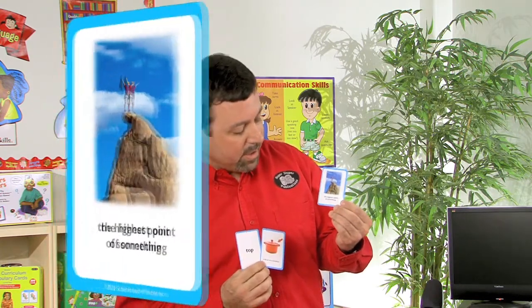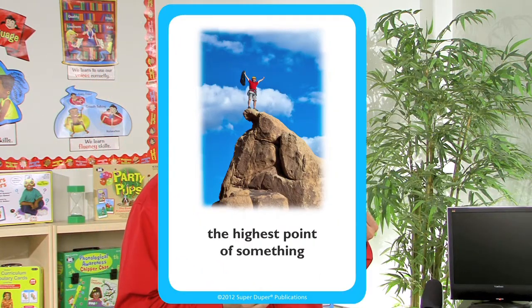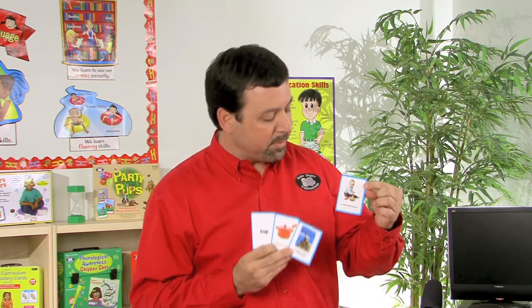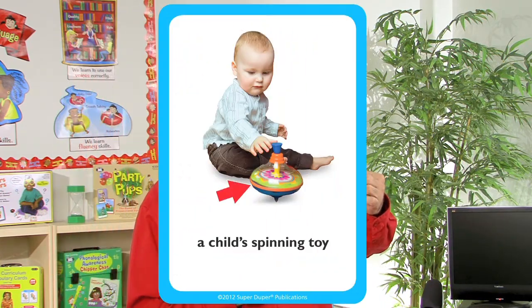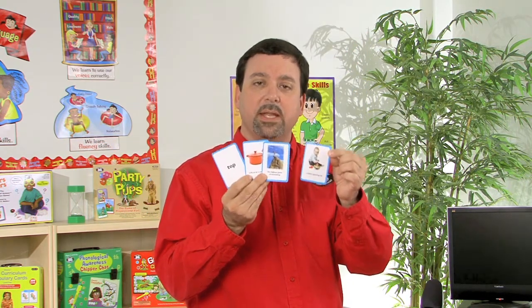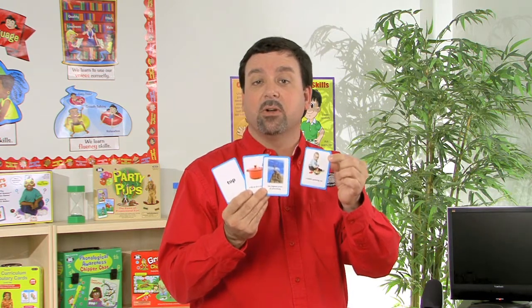Level two is going to provide a different definition that the student may be less familiar with or unfamiliar with altogether. In level two we have the word top — the highest point of something. And then level three is going to have another definition, and this will be again the word top — a child's spinning toy. You'll notice now that we have the word card and then the three definitions that are based on context that the child may or may not be familiar with.